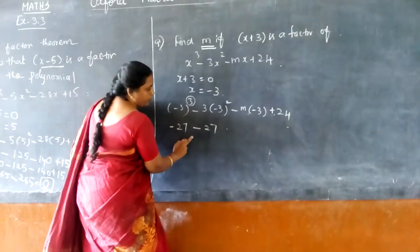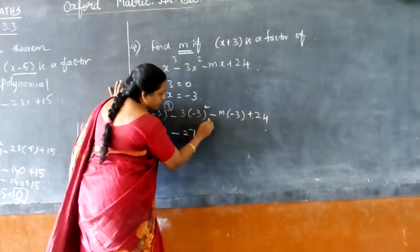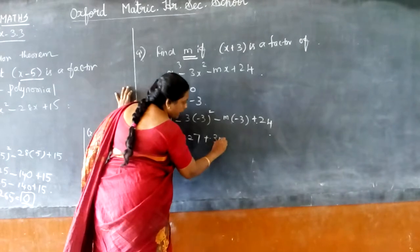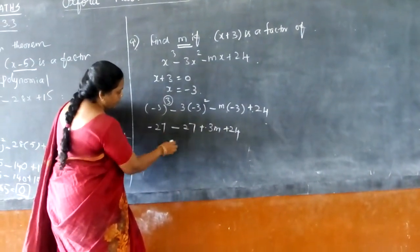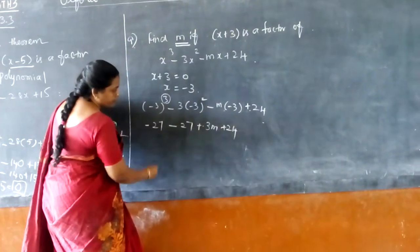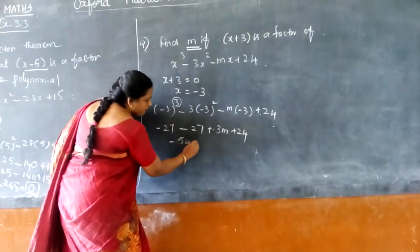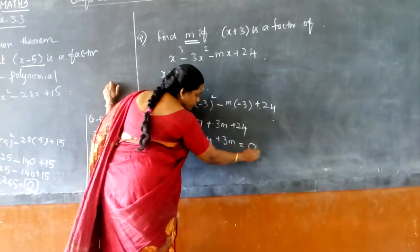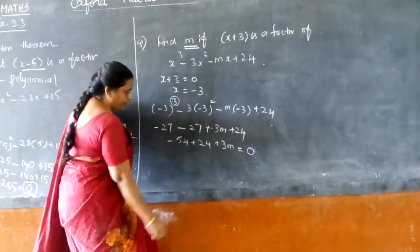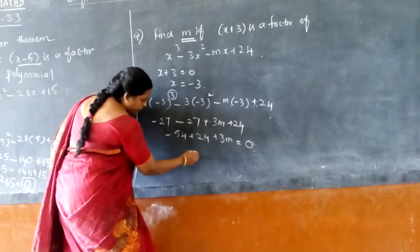But here minus is there, so 9 threes are 27. Minus into minus plus 3m plus 24. Now we can add these two values: 27 and 27 is 54, minus 54 plus 24 plus 3m, which is equal to 3m. Because I am going to find the value of m. So what is the value of m?